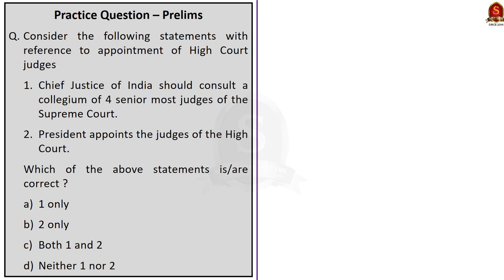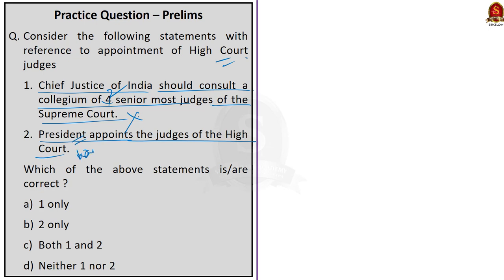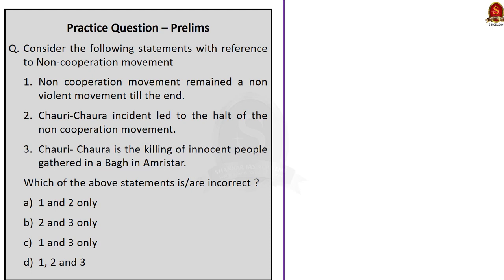Question 3 on High Court judge appointments: Statement 1 — the Chief Justice of India should consult a collegium of four senior-most judges of the Supreme Court; Statement 2 — the President appoints the judges of the High Court. Statement 1 is wrong because the CJI should consult a collegium of two senior-most judges for High Court appointments (four is for Supreme Court appointments). Statement 2 is correct as per Article 217. So the correct answer is option B — two only.